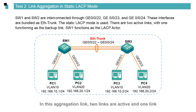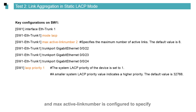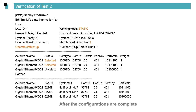First, configure SW1. Compared with the previous configuration, the mode is changed to LACP static and max active link number is configured to specify the number of active links. Then configure the highest priority for SW1. SW2 configuration is also changed, with mode and max link number configured. After the configurations are complete, run the display ETH trunk command to check the ETH trunk status.